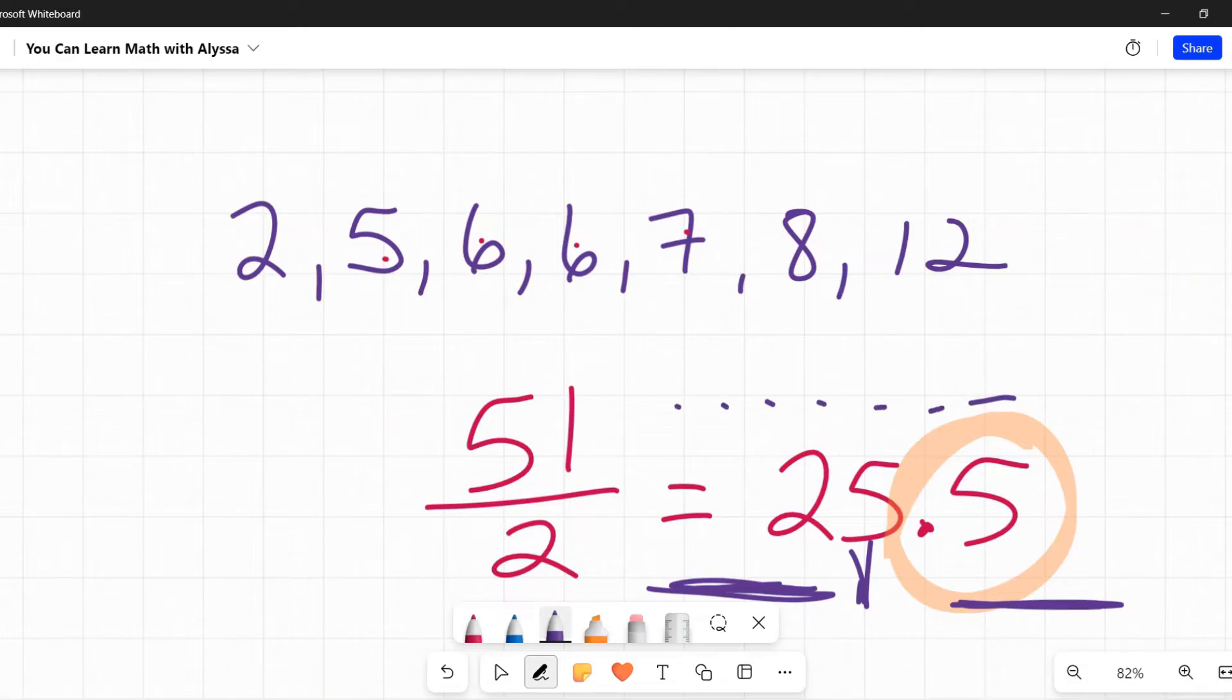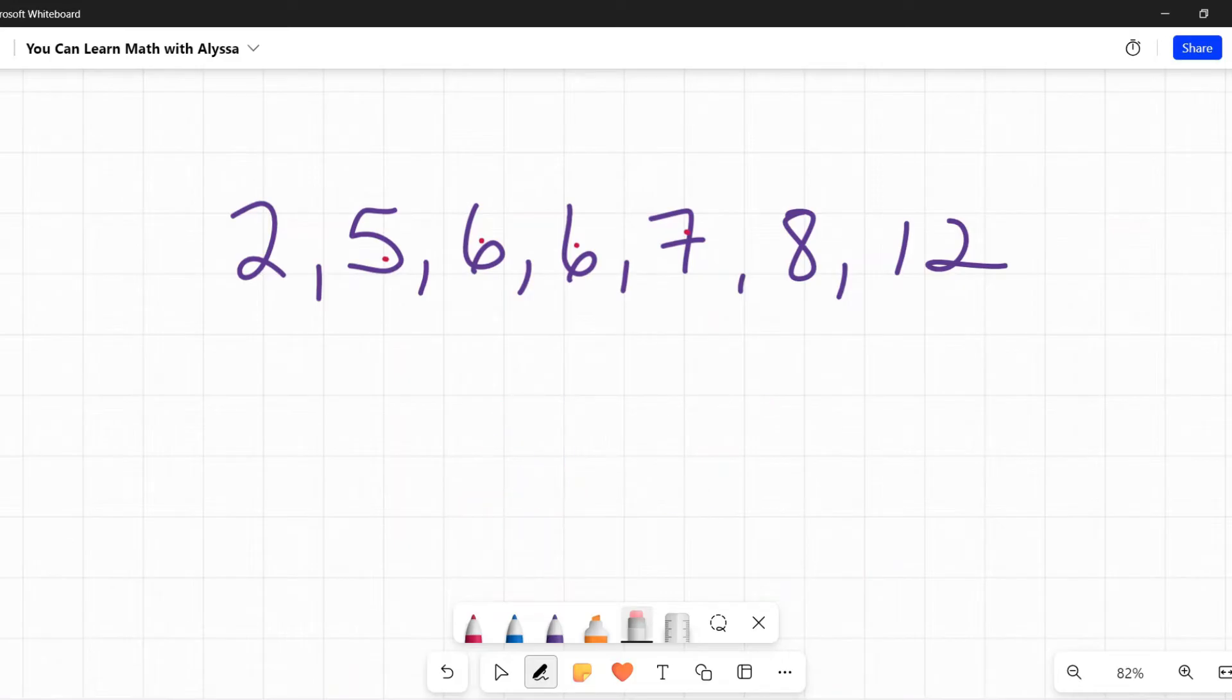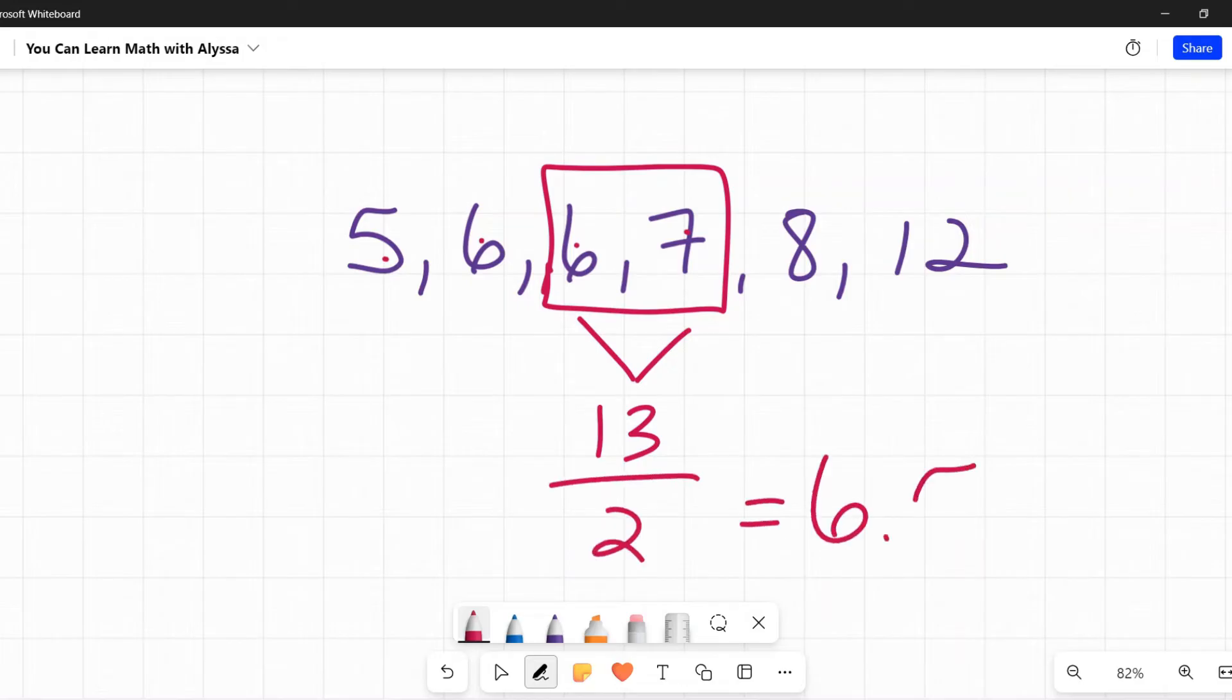So you would count over one, two, three, four, to the 26th number. That would be your median. Okay, now if it is an even number of terms, a number of datum, what you're going to do is you're going to look for the two numbers that are in the middle because there isn't a single number that is smack dab in the middle. So here we have six numbers in this data set. I go, oh, three on the left, three on the right. Like there's nothing in the middle. What do I do? You find the two numbers that are on either side of that non-existent middle number and you average them. Six plus seven is 13 divided by two is 6.5. That is my median.